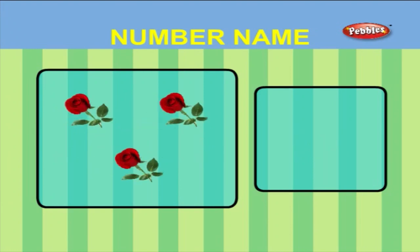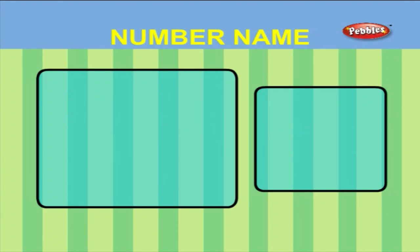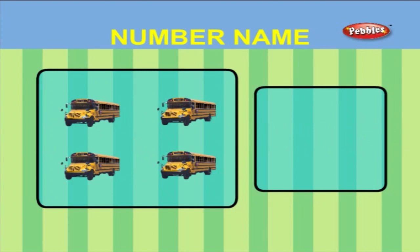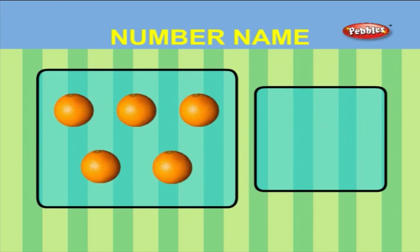There are three roses. T H R E E - Three. There are four buses. F O U R - Four. There are five oranges. F I V E - Five.